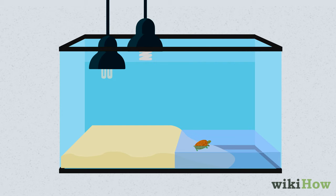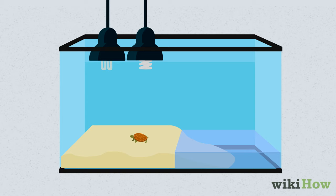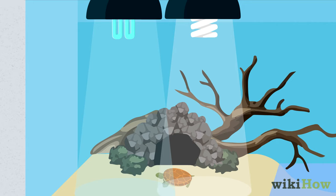Your turtle also needs a UV light system above the dry area in its tank. Turtles need both UVA and UVB light in order to be healthy. Set a piece of driftwood or a rock under the light for your turtle to bask on.